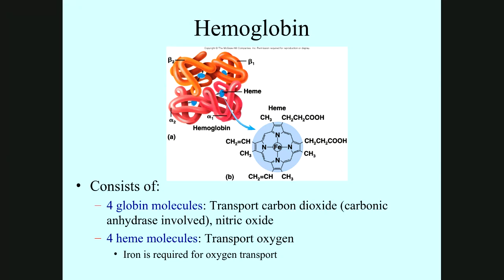The transport of oxygen and CO2 is primarily due to hemoglobin. Hemoglobin has four subunits: alpha-1, alpha-2, beta-1, and beta-2. They also have four heme groups, and inside each heme is an iron atom, which has affinity to transport oxygen. The four globin molecules transport carbon dioxide, and carbonic anhydrase is involved in transporting CO2 and also nitric oxide.